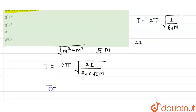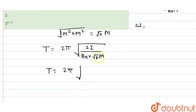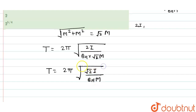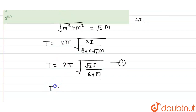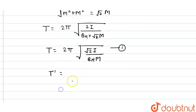Simplifying the expression for T: dividing 2 by √2 gives √2, so T = 2π√(√2·I / (B·M)). For the single magnet, the new time period T' = 2π√(I / (B·M)). This is the second equation.